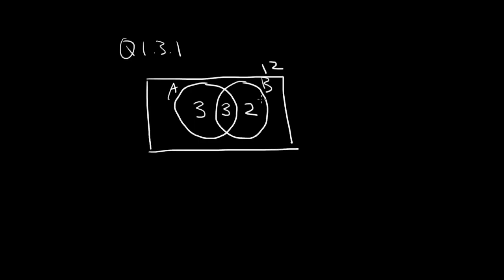Since we know that there are 12 in the universe, and there are 8 of them here inside the circles, that must leave 4 outside the circles.